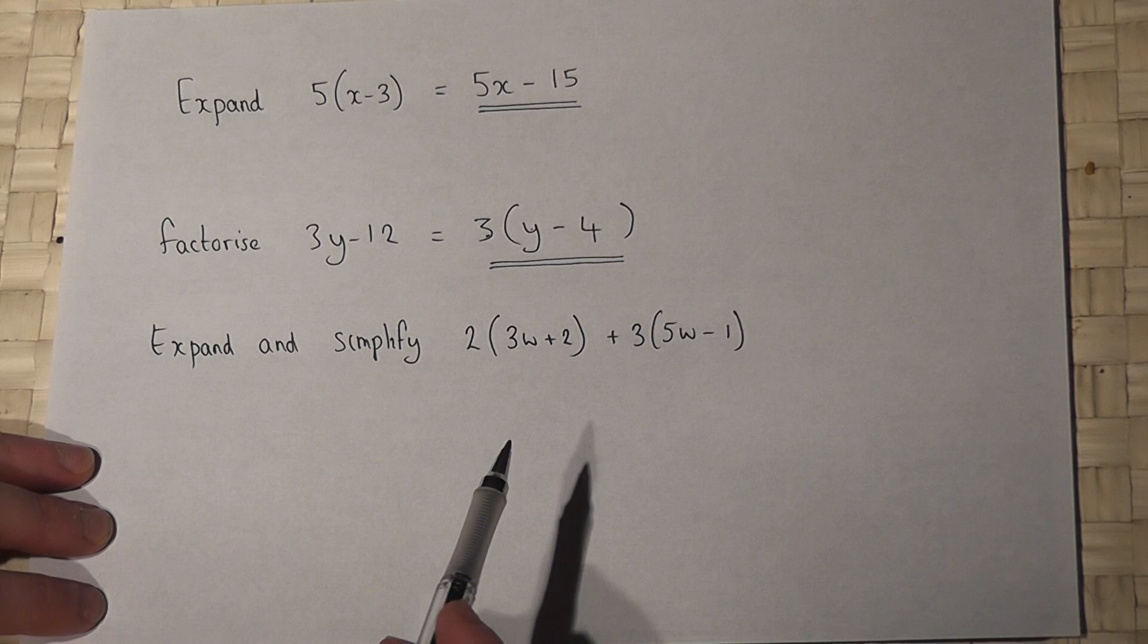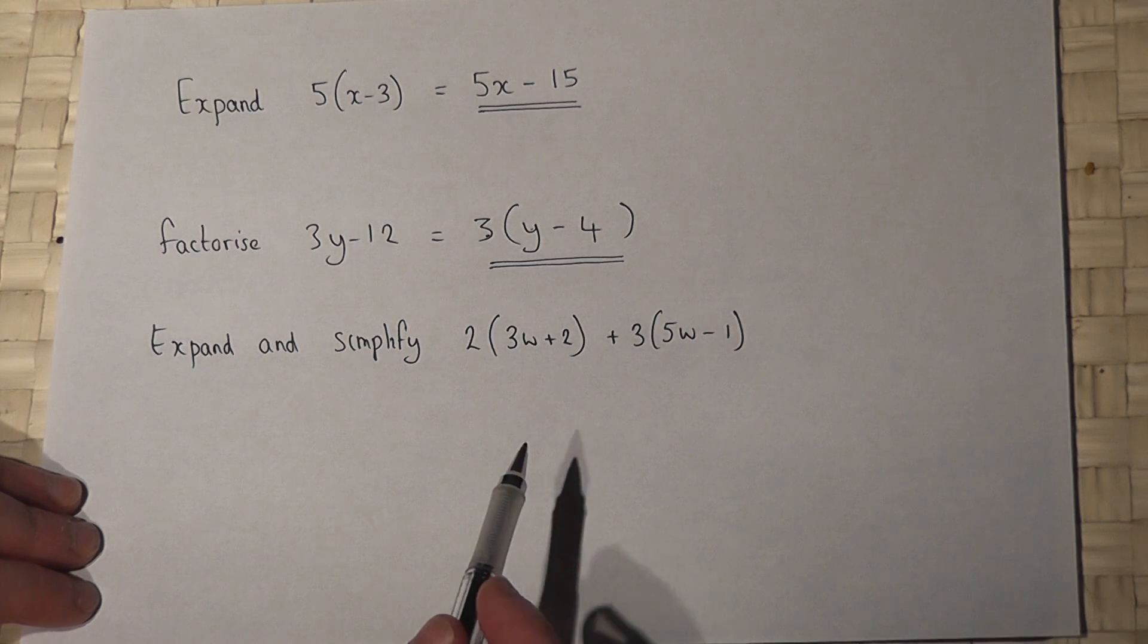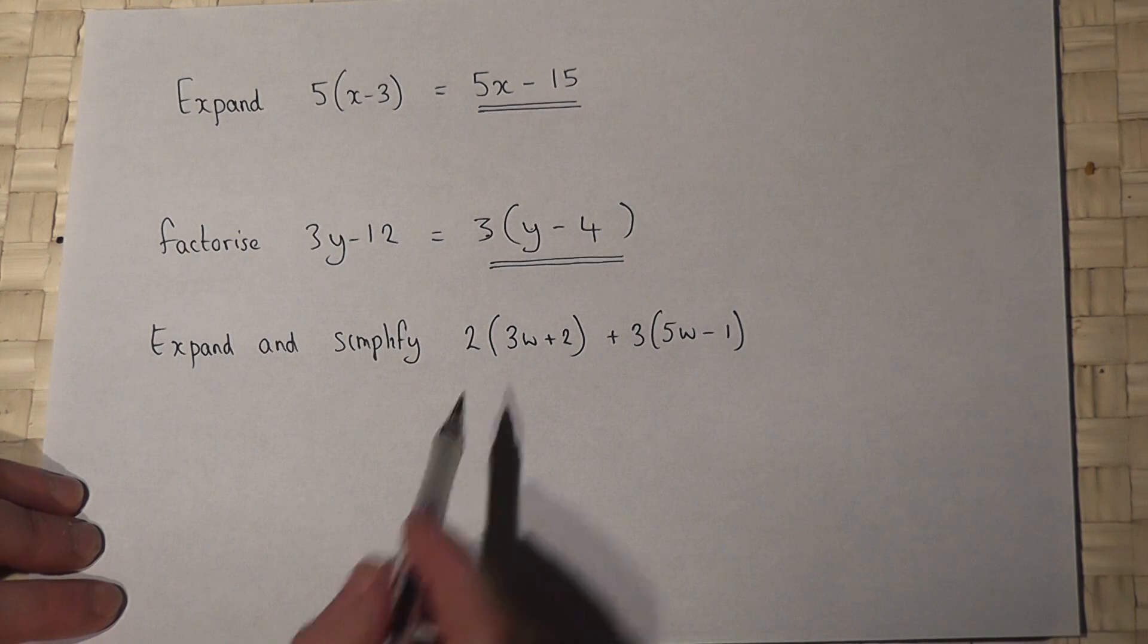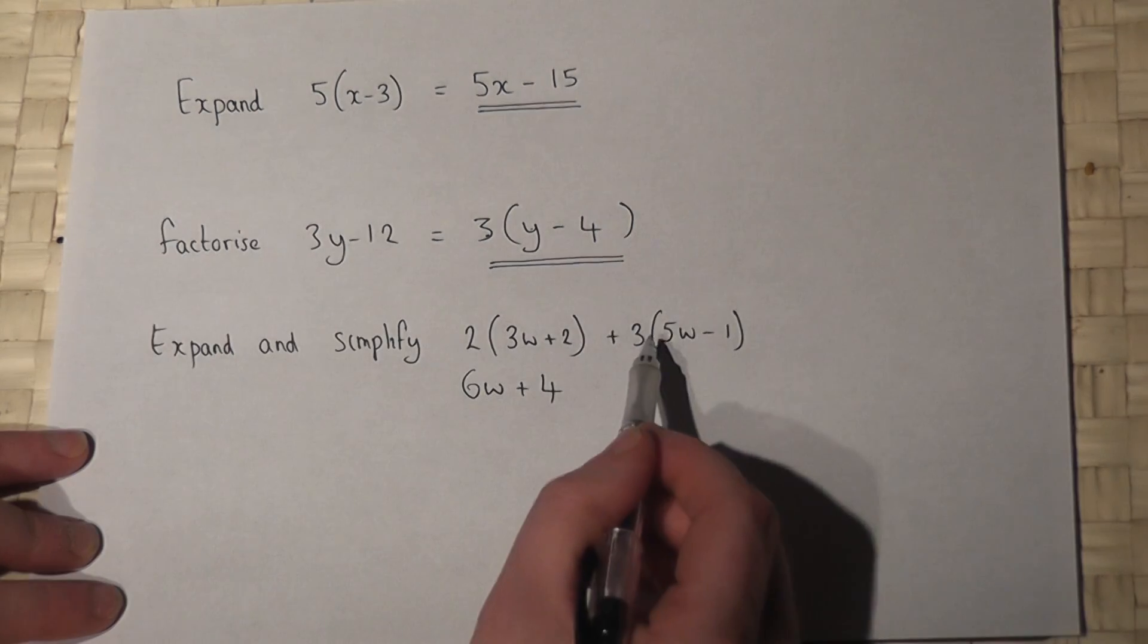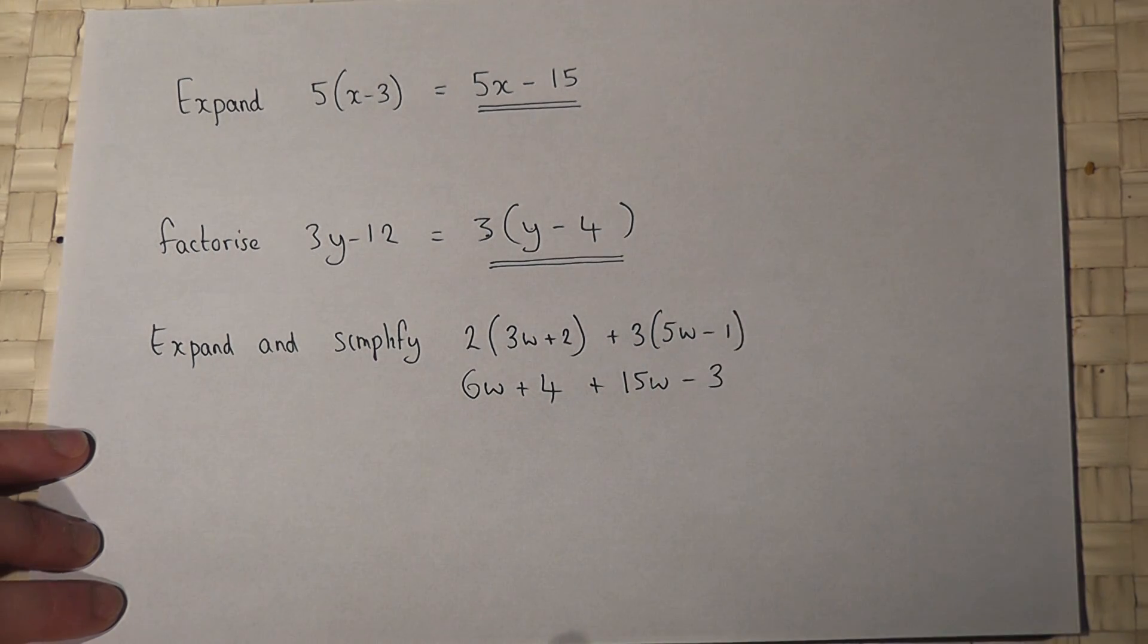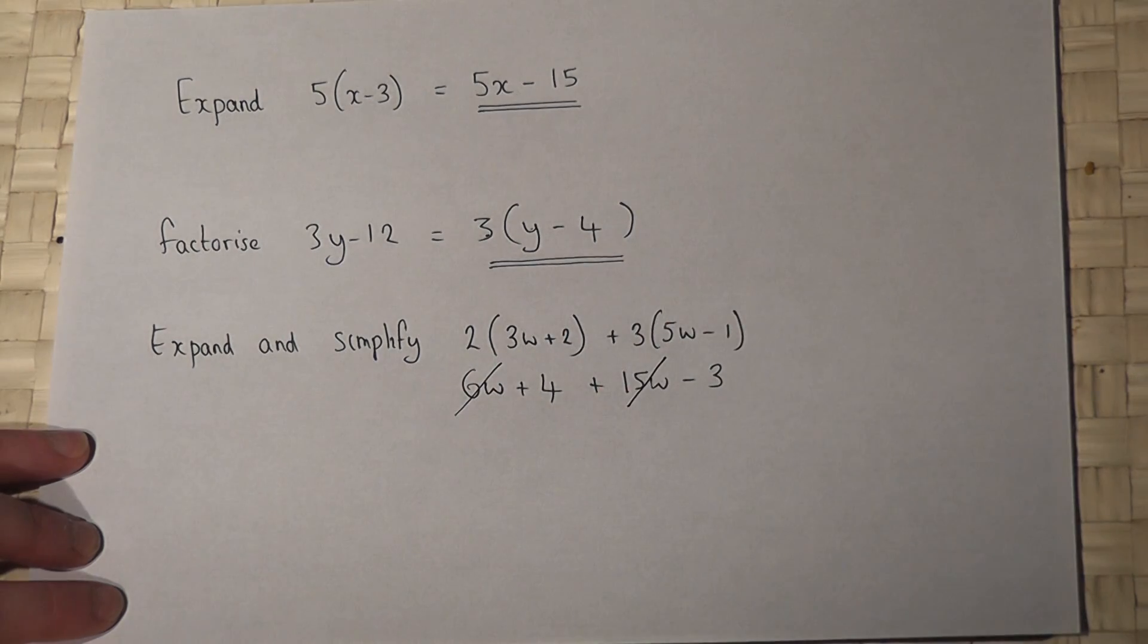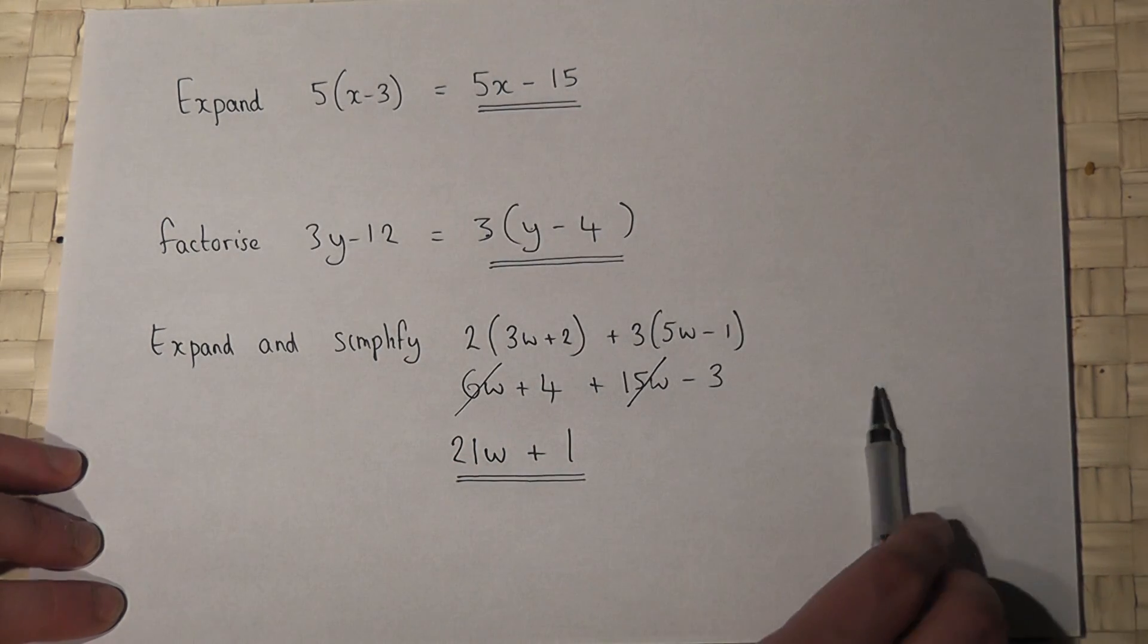Now the last one asks us to expand and simplify two pairs of linear brackets. We expand both brackets separately. Two lots of the first bracket is 6w + 4, and three lots of the second bracket is 15w - 3. Then simplify: 6w + 15w is 21w, and 4 - 3 is 1. So the answer is 21w + 1.